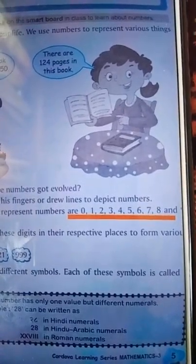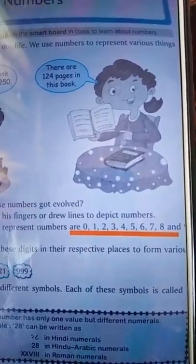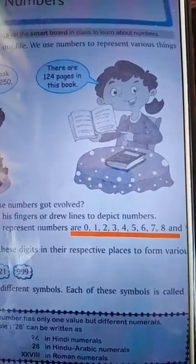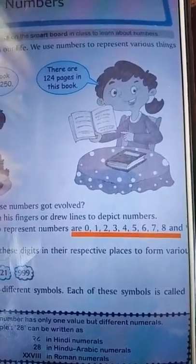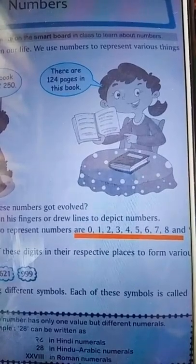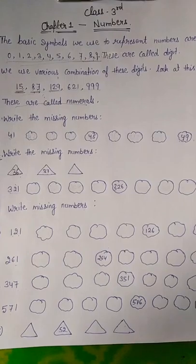Look at this picture. There are some symbols that are 0, 1, 2, 3, 4, 5, 6, 7, 8 and 9. So what we call these symbols? These symbols are called digits. There are 10 digits in our number.